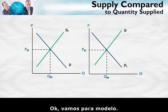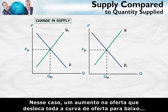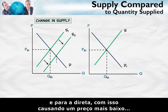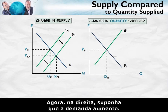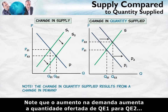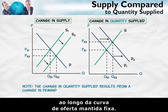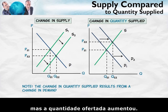Let's go to the model. On the left, we begin with a change in supply — in this case, an increase in supply that shifts the entire supply curve down and to the right, thereby generating a lower price and greater quantity sold. Now, on the right, suppose that the demand increases. Notice that the increase in demand increases the quantity supplied from QE1 to QE2 along a fixed supply curve. The supply hasn't changed — the supply curve hasn't moved.